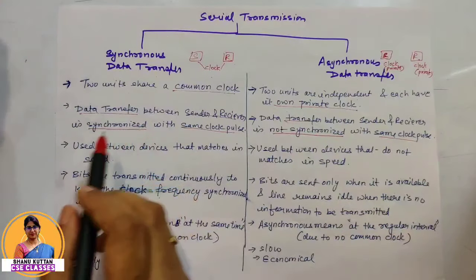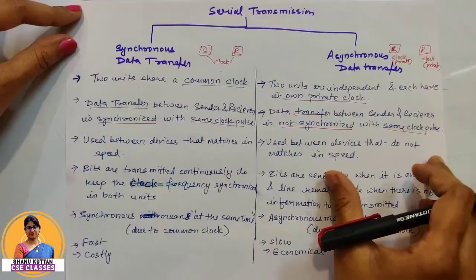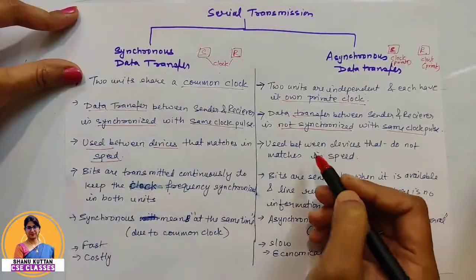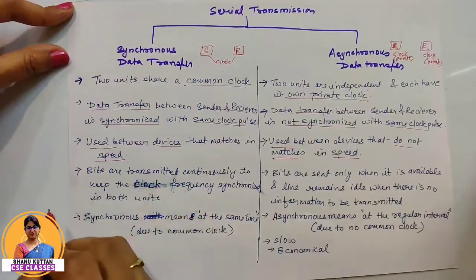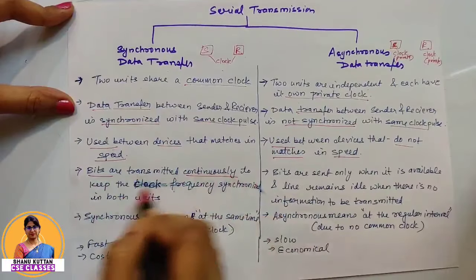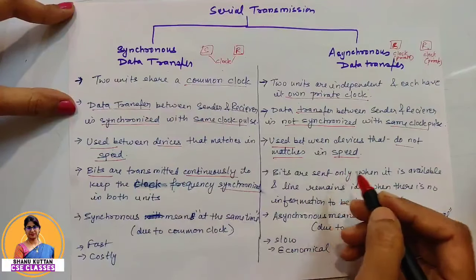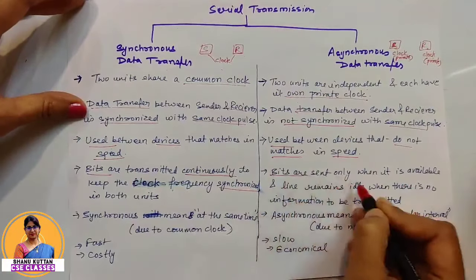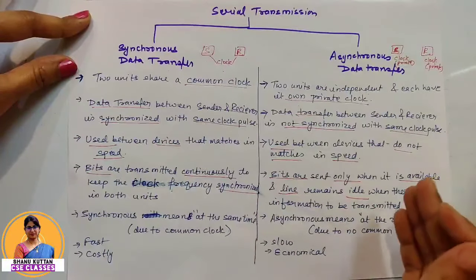In synchronous data transfer, bits are continuously transmitted by keeping the clock frequency synchronized in both units. In asynchronous, bits are not transmitted continuously — bits are sent only when available, and the lines remain idle when there is no information to be transmitted. Synchronous means data is sent at the same time continuously because both clocks are common, while asynchronous means data is sent at regular intervals only when data is available.